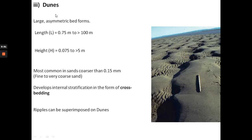So what are dunes? They are asymmetrical bedforms that develop under subcritical flow. They are relatively larger compared to ripples, with lengths of between 0.75 meters to more than 100 meters — so these can be very large features. Heights are between 0.075 meters to more than 5 meters. Dunes are most common in sands coarser than 0.15 millimeters, in fine to very coarse-grained sand.